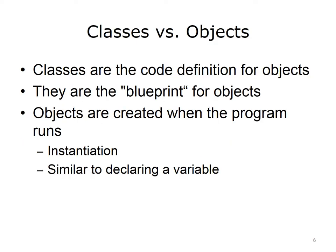It is important to understand some terminology with respect to objects. Objects are not created until a program runs. Writing code for objects involves classes. Classes are the code definition for objects and are considered the blueprints for an object. When a class is used — meaning an object of a class is created — the class instantiates that object. It is similar to declaring a variable, except that the data type is the class type instead of a primitive type for a variable.